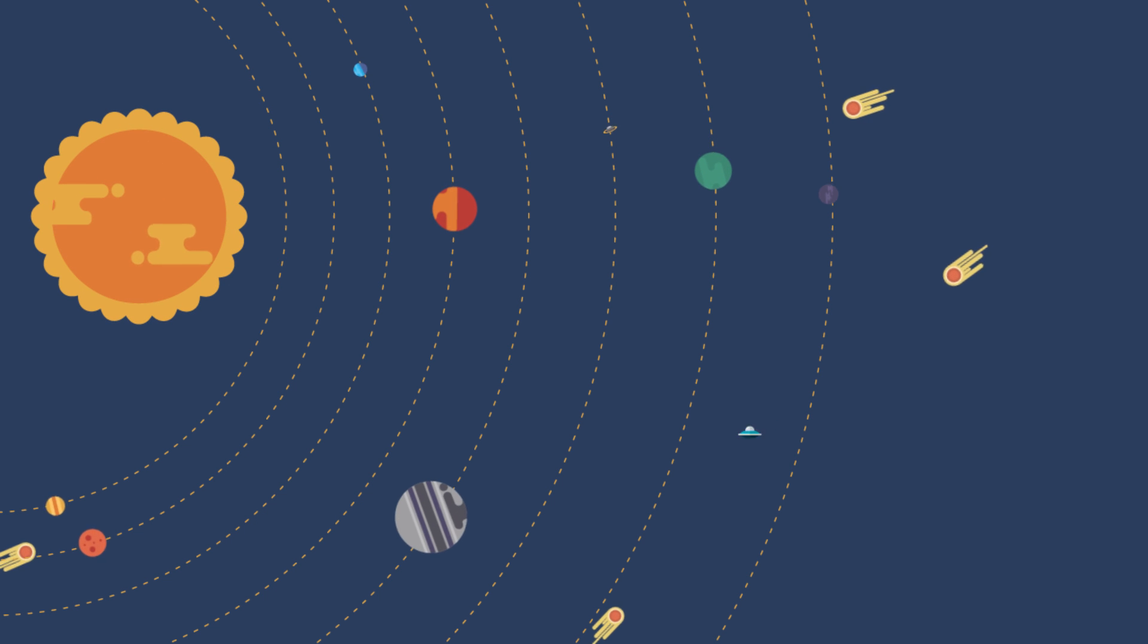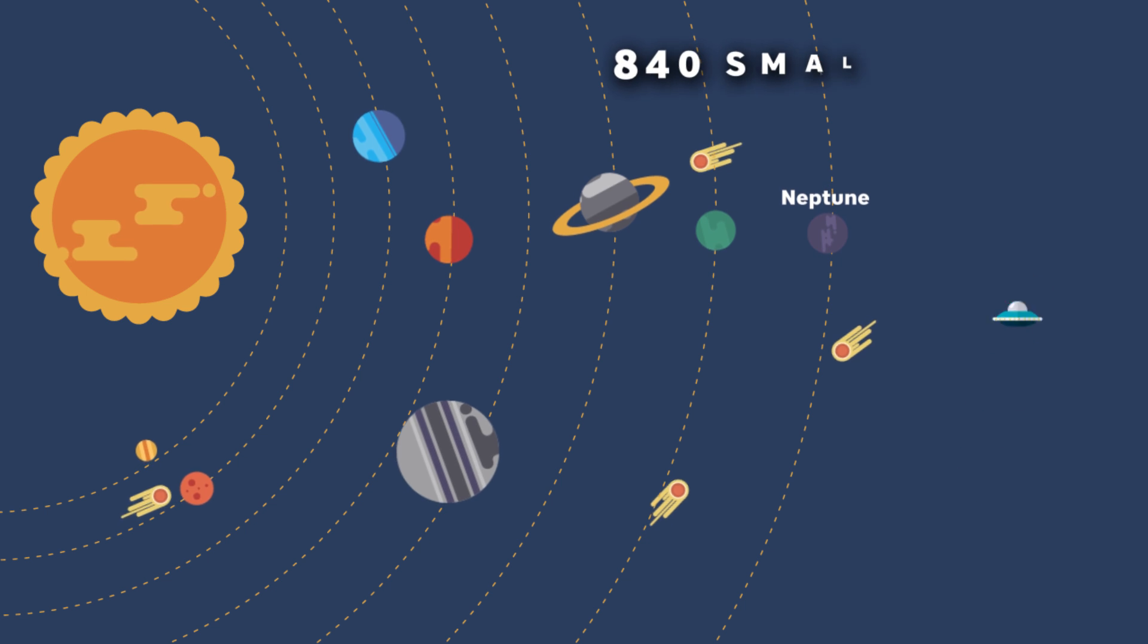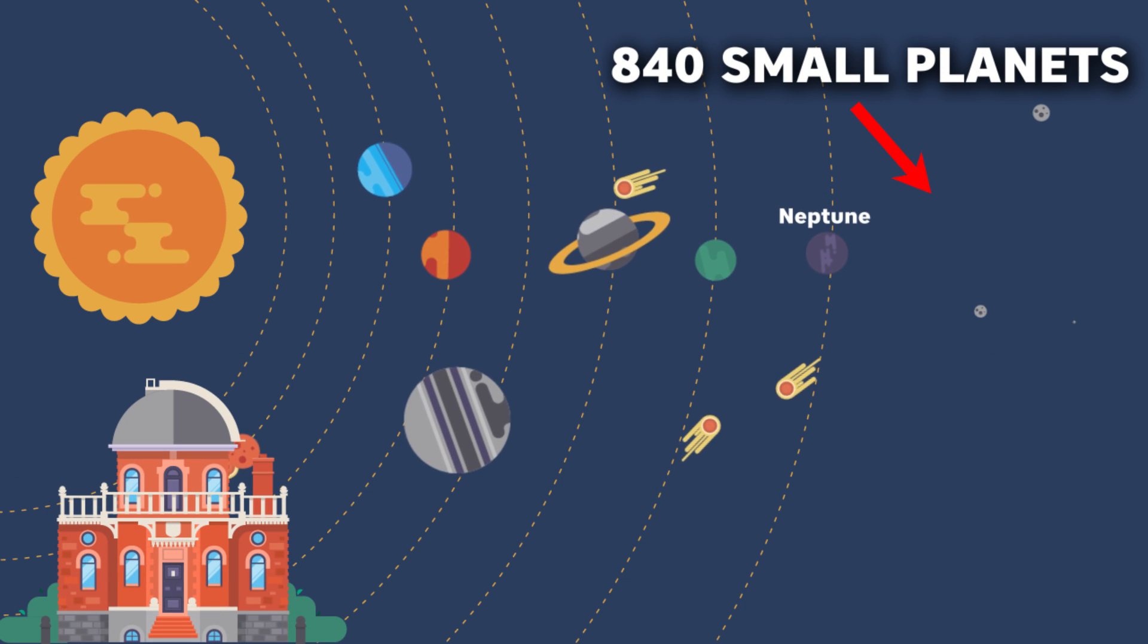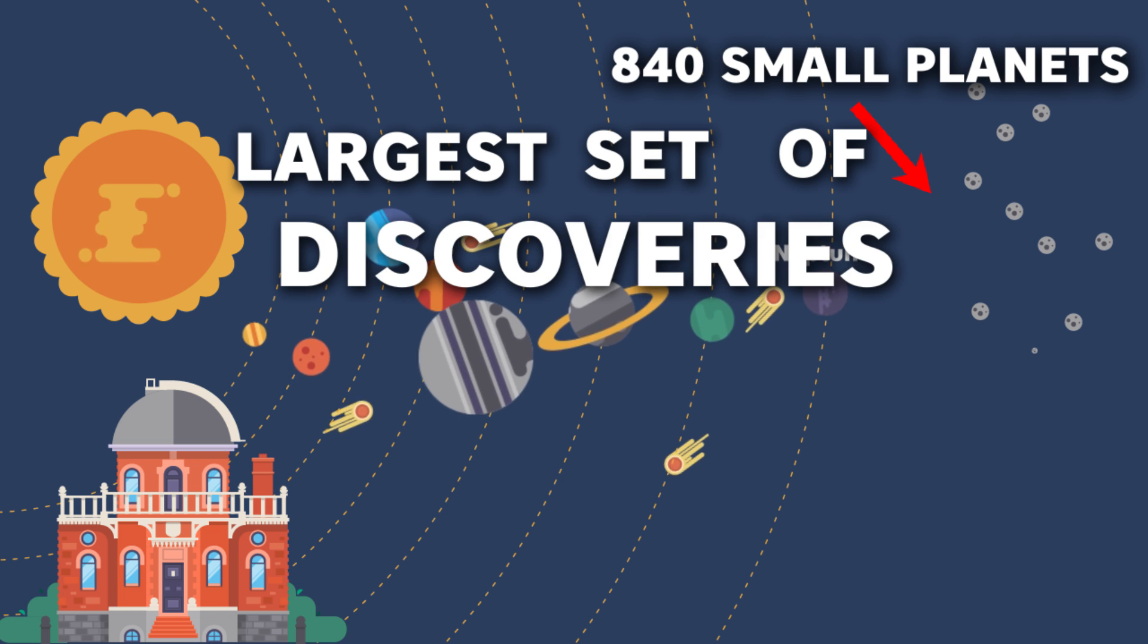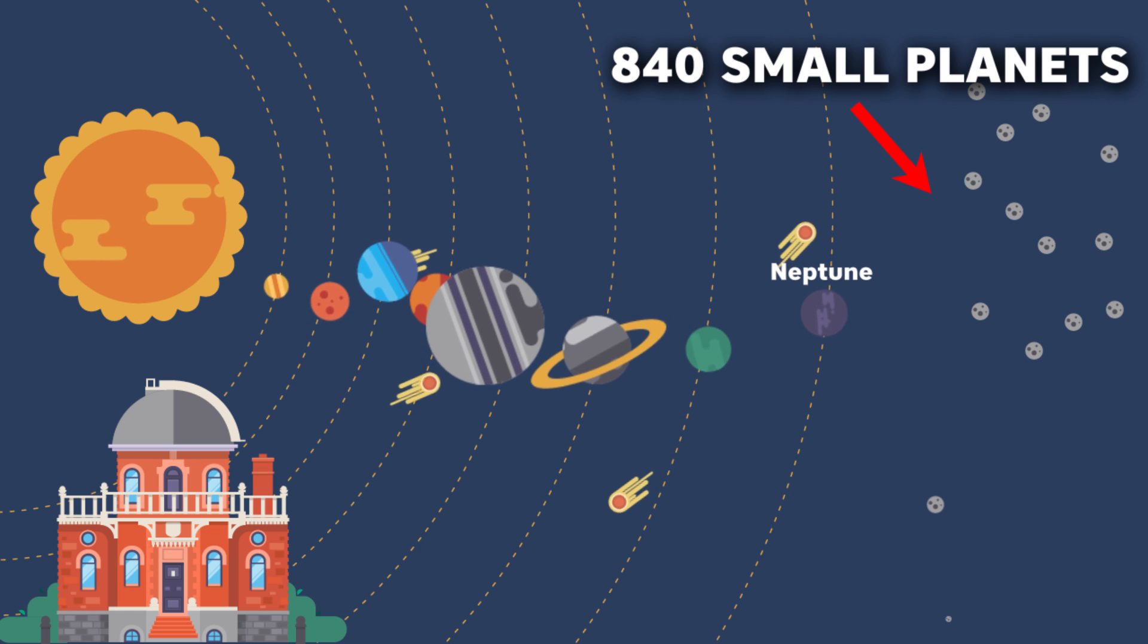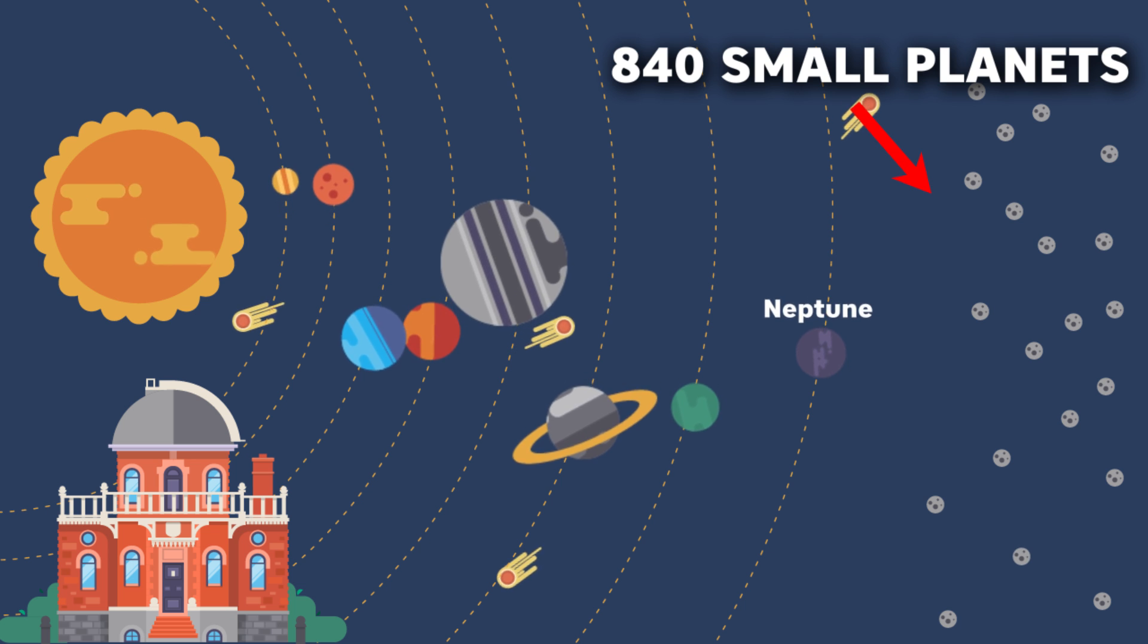Our solar system is a tiny but wonderfully familiar corner of the vast dark universe. Recently we have discovered 840 small worlds in the distant and hard to explore region beyond Neptune. This is the largest set of discoveries ever made, increasing the number of distant objects in the orbit of the sun by 50%.